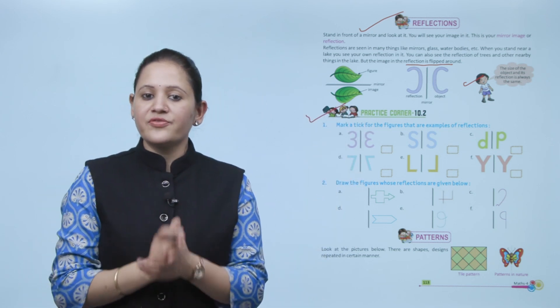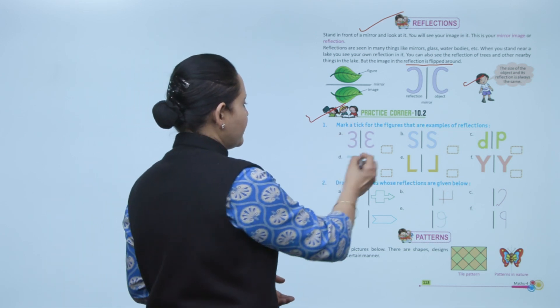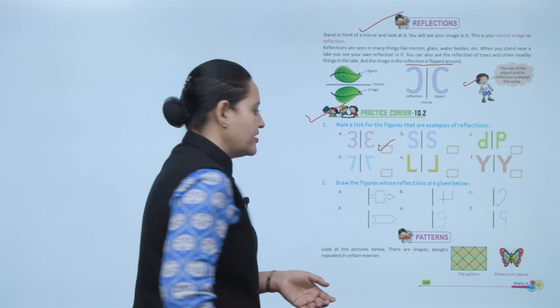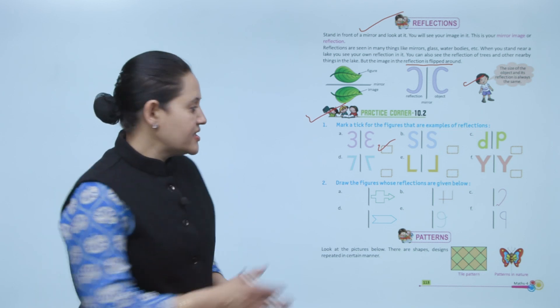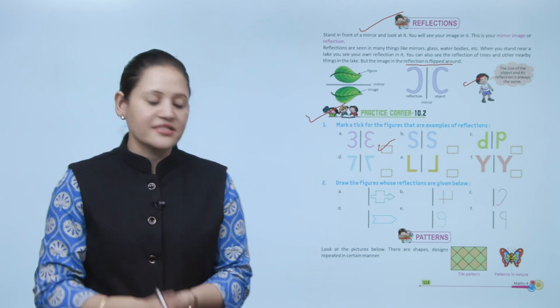Next is Practice Corner 10.2. Mark the tick for the figures that are examples of reflection. Here this is an example of reflection, so we'll tick it because when we see its image in the mirror it will look like this.